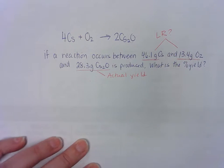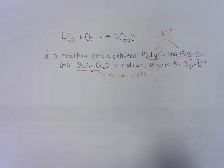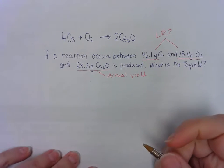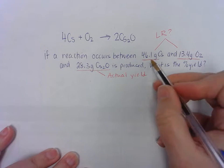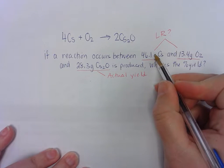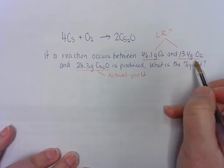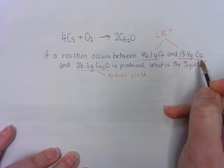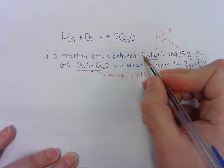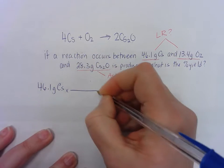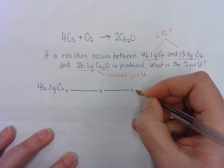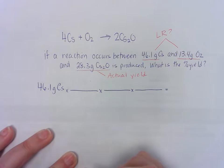So the first step is we need to decide between the first two substances, the cesium and the oxygen, which one's the limiting reactant. And you can pick whichever one you want to change from units of grams of one into grams of the other and decide which one runs out first. In general, I picked the first number. So 46.1 grams of CS, and I'm going to go from grams of CS into grams of oxygen. And I know that that's three steps.